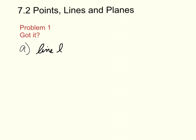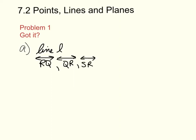You can also name a line using any two of the other points on the line. So you can name it line RQ, line QR, or line SR. Any combination of those three points on that line you could use as the name.